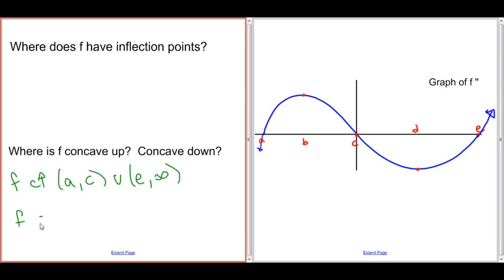f is concave down when f double prime is negative. Now, f double prime is negative to the left of a, because the graph is below the x-axis. So from negative infinity to a, this graph is concave down, or the graph of f is concave down, because the graph of f double prime is below the x-axis.